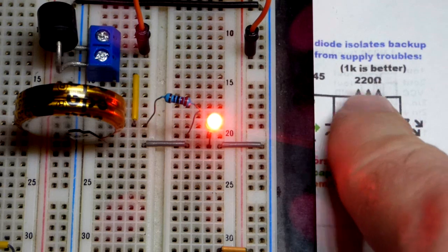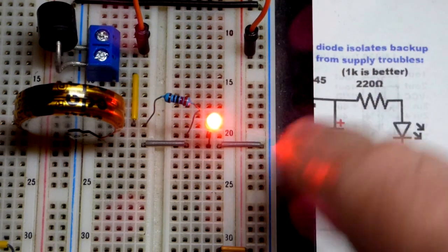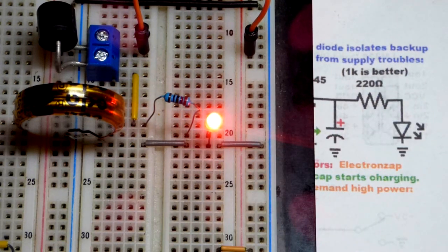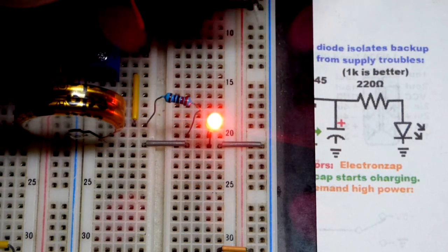So now I swapped out the 1k resistor with the 220 ohm resistor. We got about four times the amount of current flowing through there. Let's see how well this one does.